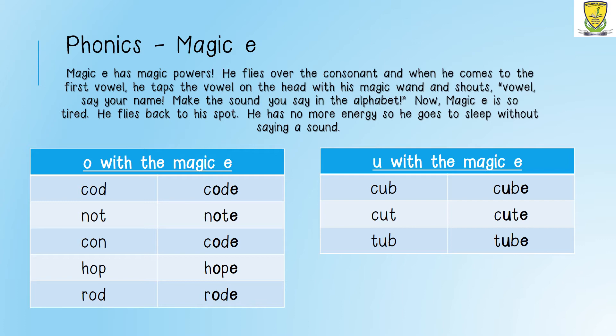My next word is 'cut': K-U-T, cut. If I add a magic E at the end of the word, my U now becomes a U. So my word is now going to be K-U-T-E, cute. K-U-T-E, cute.